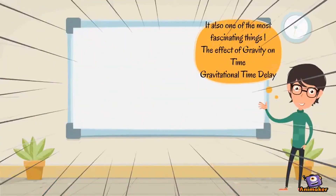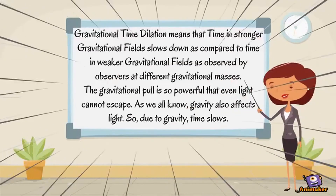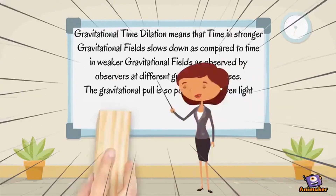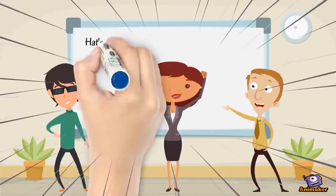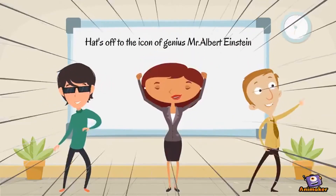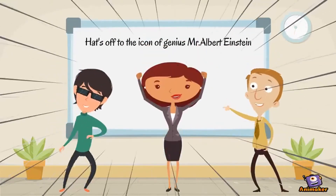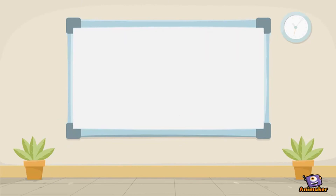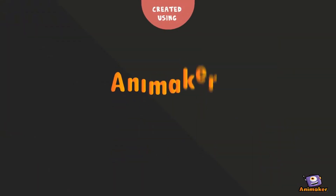Gravitational time delay means that time in stronger gravitational fields slows down compared to time in weaker gravitational fields, as observed by observers at different gravitational potentials. The gravitation can be so powerful that even light cannot escape. As we know, gravity affects light — and so due to gravity, time slows. Hats off to the icon of genius, Mr. Albert Einstein.